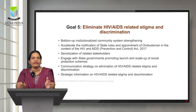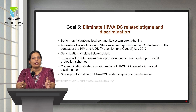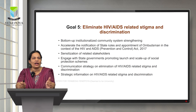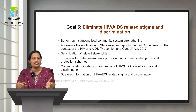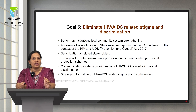Goal 5 — eliminate HIV AIDS related stigma and discrimination — strategies include: implement bottom-up institutionalized community system strengthening; involve and engage community stakeholders to ensure social acceptance; accelerate notification of state rules and appointment of Ombudsman in the context of HIV and AIDS; sensitize related stakeholders; engage with state governments to promote and scale up social protection schemes; and implement behavioral change communication strategies amongst the community and various stakeholders, with information on stigma and discrimination as perceived by people living with HIV AIDS.